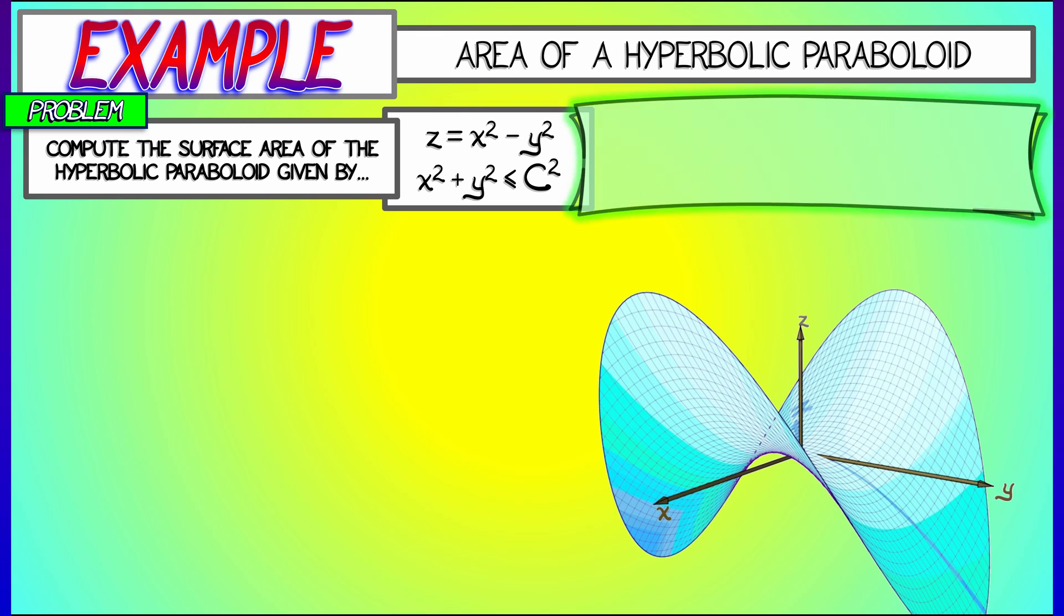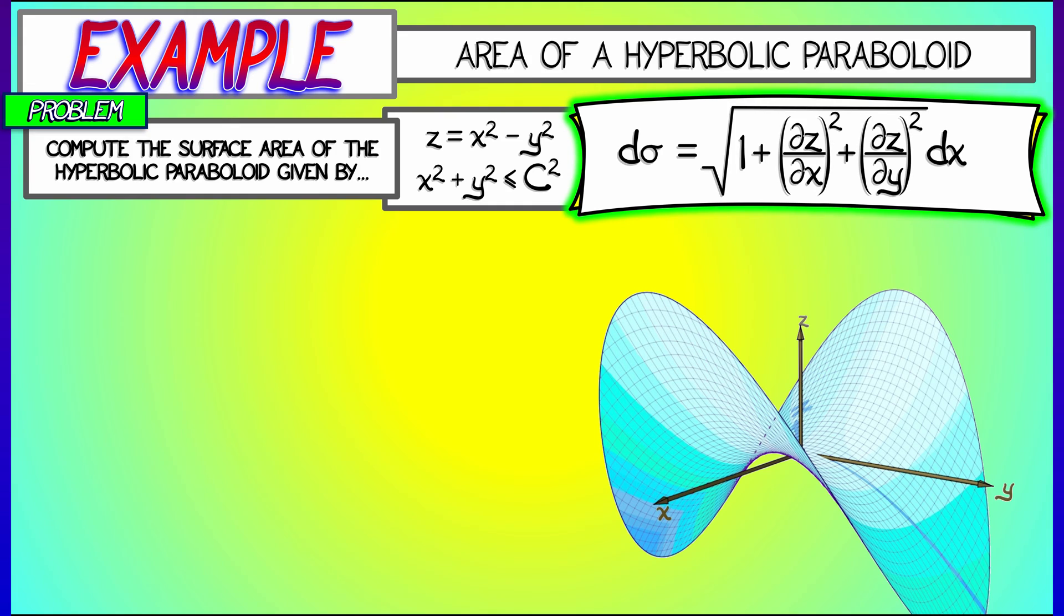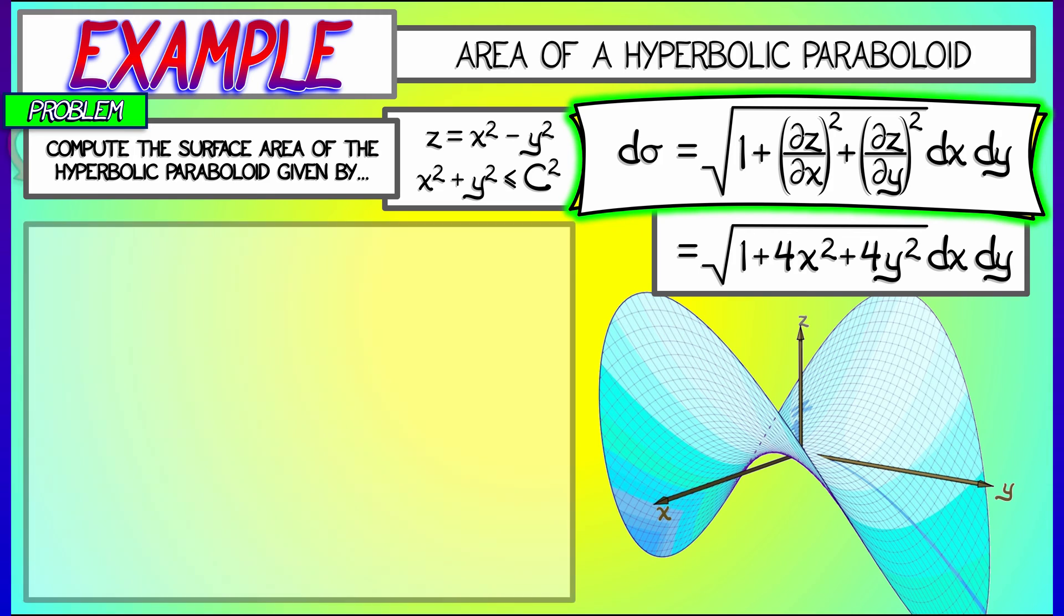Let's say that x and y are constrained to a disk of radius c. The surface area element is the square root of 1 plus partial z partial x squared plus partial z partial y squared dx dy. In this case, partial z partial x is 2x, partial z partial y is minus 2y. That gives d sigma as square root of 1 plus 4x squared plus 4y squared dx dy.